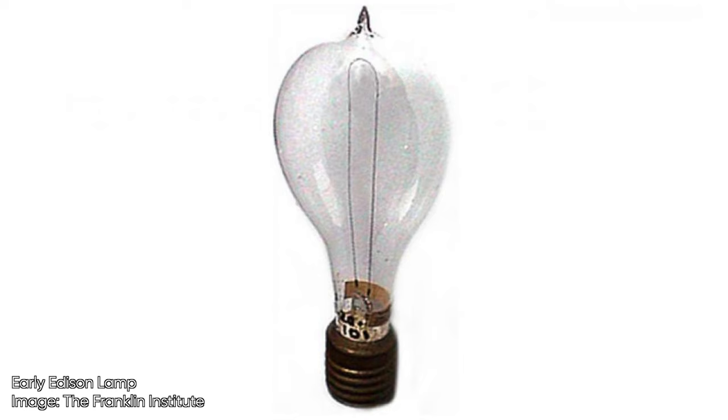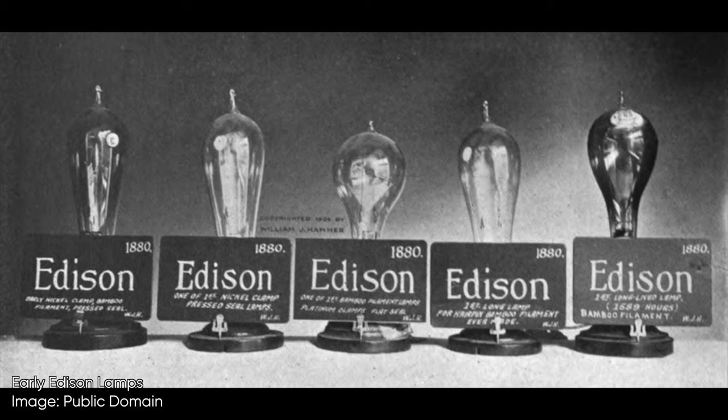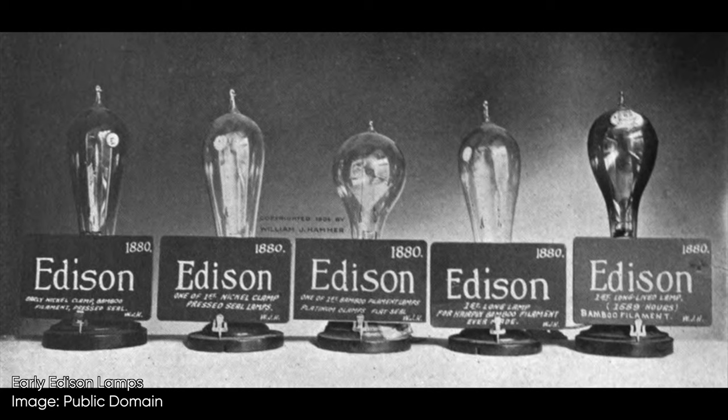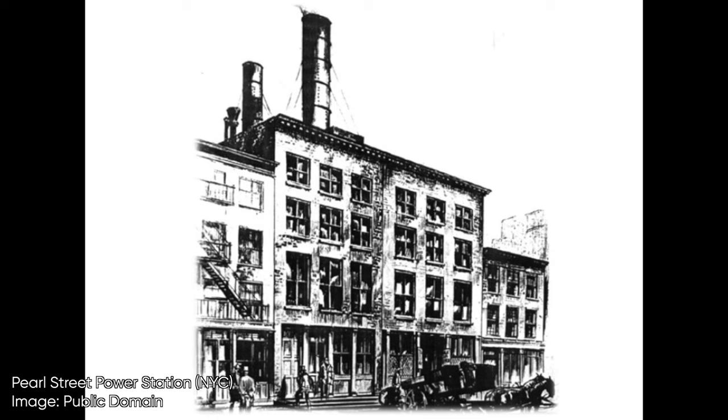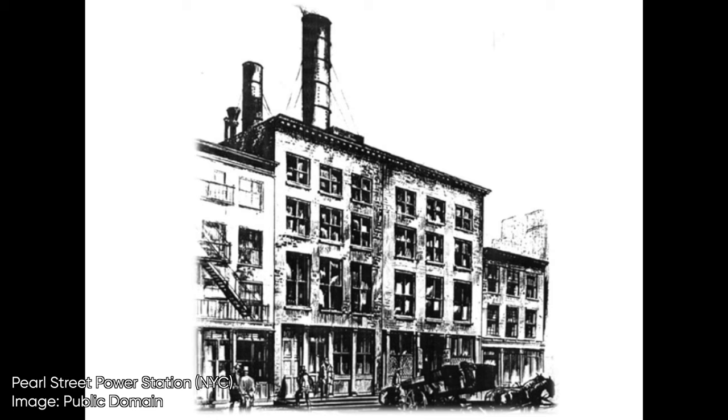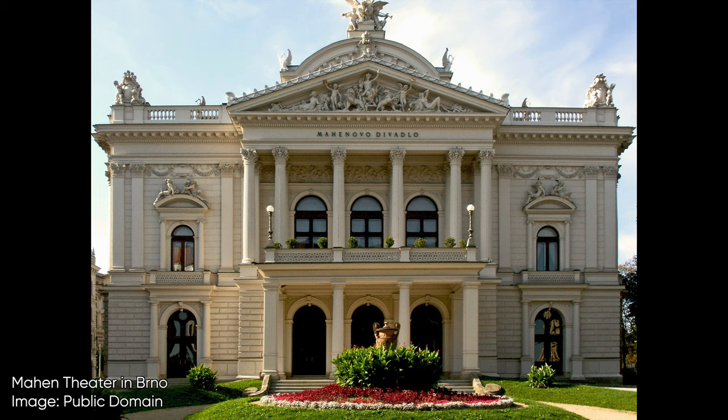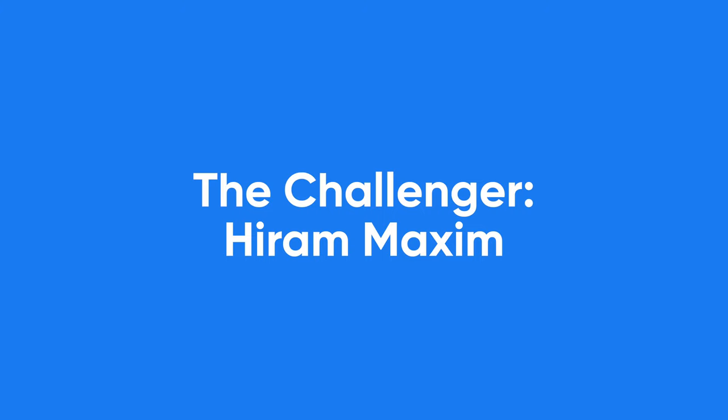Despite commercializing after Swan, Edison arguably created the first practical light bulb due to its longer lifespan, and he built a commercially viable power grid to go along with it. In 1882, Edison switched on two DC power stations in New York and London, powering street lights and dozens of homes. The first public building to use Edison's electric lamps was a theater in Brno, which is now part of the Czech Republic.